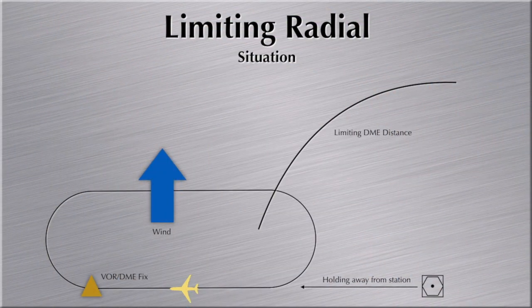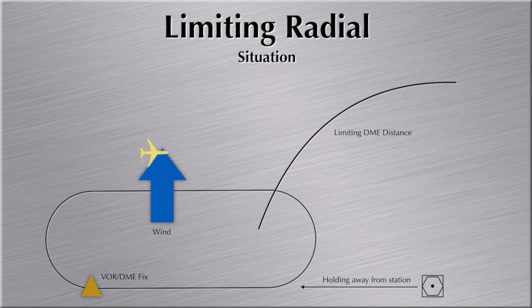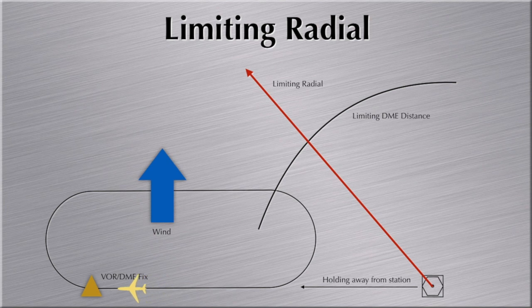To make sure that situation is covered and cannot lead to dangerous cases, limiting radials are established. We require a limiting radial when we hold at the VOR DME fix away from the station, and the limiting DME distance that ends the outbound leg is closer to the VOR DME station than the actual holding fix. If this distance is relatively close and we have wind as indicated in the film, the aircraft may never capture the limiting DME distance. A limiting radial allows the aircraft to end the outbound leg and start the inbound turn.